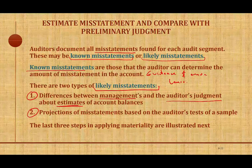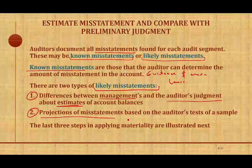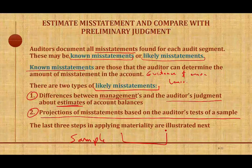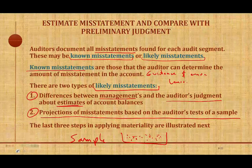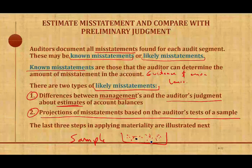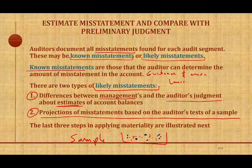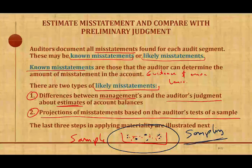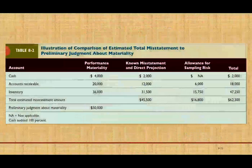The second type of likely misstatement, which we're going to work with more today, is the projection of misstatement based on the auditor's test of a sample. For most accounts, we sample. Sampling means you're taking a population that has hundreds of items, and you're only selecting maybe 20 of those items. Based on those 20 items, you're making a statement on the total population. Your sample may not be representative of the whole population. We'll talk about sampling in much more detail later. So we could also have misstatement due to sampling.